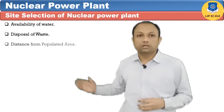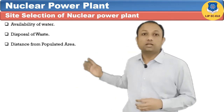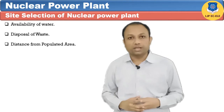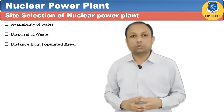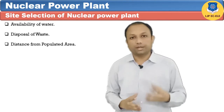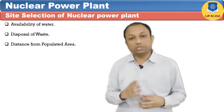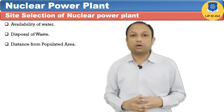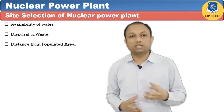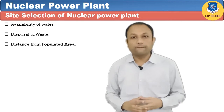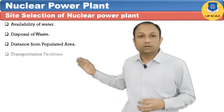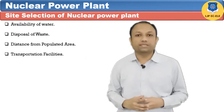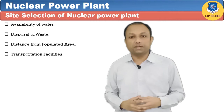Third, distance from populated area: as there is always a probability of radioactivity, it is always preferable to locate a nuclear power plant sufficiently away from the populated area. Fourth, transportation facilities: during the commissioning period, heavy equipment needs to be erected, which is to be transported from the manufacturer's side.